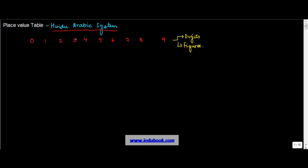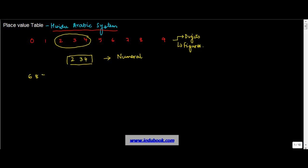When you take a certain number of digits or figures together, this collection of digits or figures is known as a numeral. There could be many situations where you might have these numerals taken together. So let's take some of these: 6, 8, 7, 9; then 3, 1, 2, 9, 8; and let's take one more — 4, 6, 2, 8, 7, 9. These groups of digits are known as numerals.